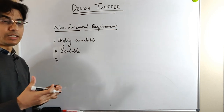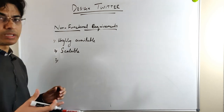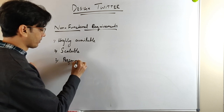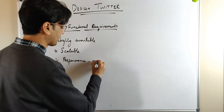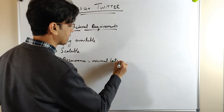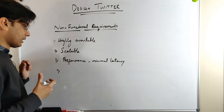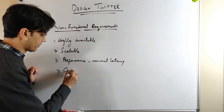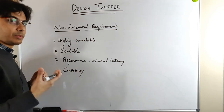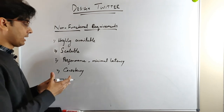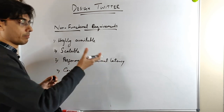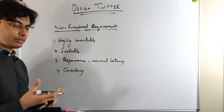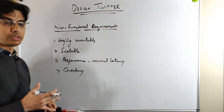We would like to generate all timelines with minimal latency — within half a second or a second. The fourth non-functional requirement is consistency. Between strong consistency and minimal latency, we would always prefer minimal latency, so it is okay for our service to have eventual consistency as far as the user home timeline or search is concerned.